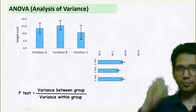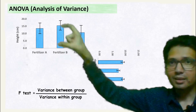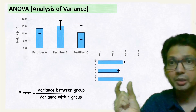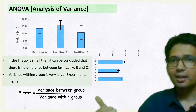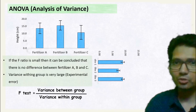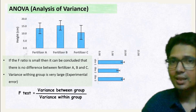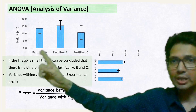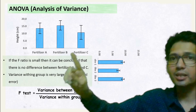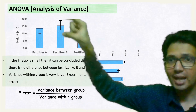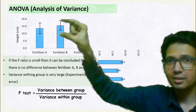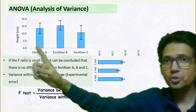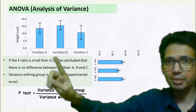Now let's see the second scenario. In this case, if the experimental error is large as compared to the variance between group, then the F ratio will be small. So if the F ratio is small, it can be concluded that there is no difference between Treatment A, Treatment B, and Treatment C. Statistically, there is no difference between A, B, and C.